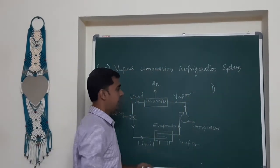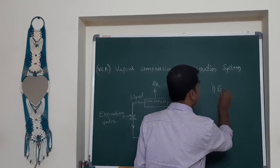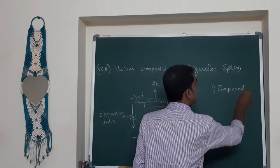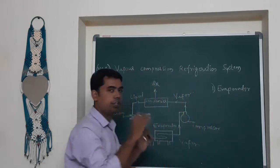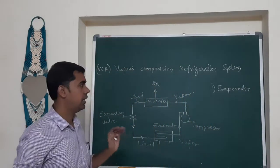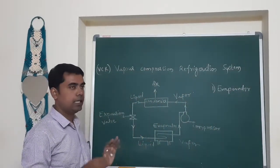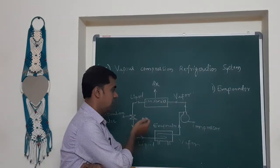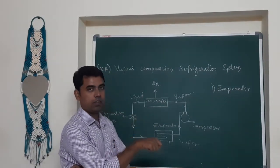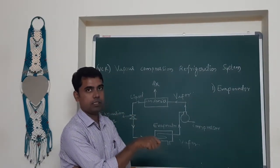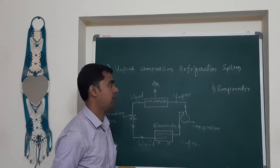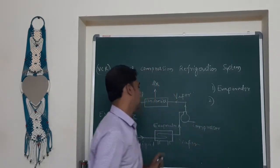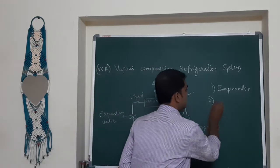The first part is the evaporator, in which evaporation of the refrigerant takes place. The evaporator is located inside the space to be cooled, and the refrigerant absorbs latent heat of vaporization there.